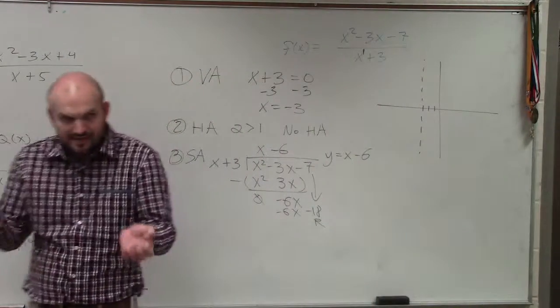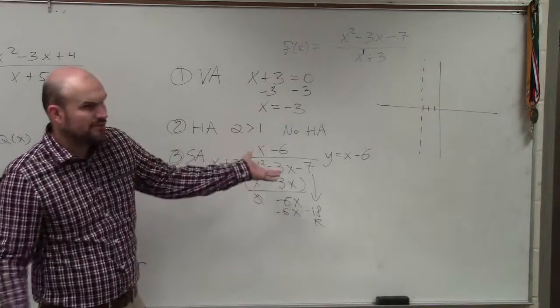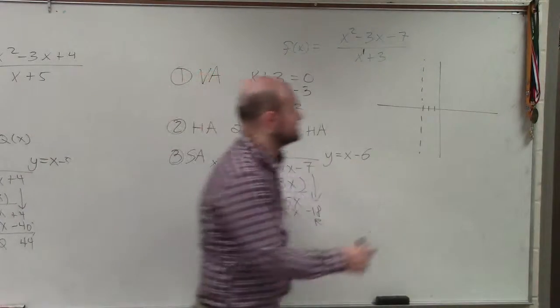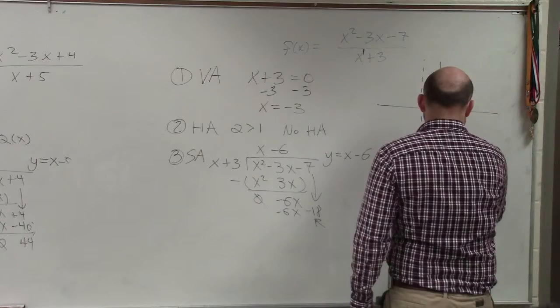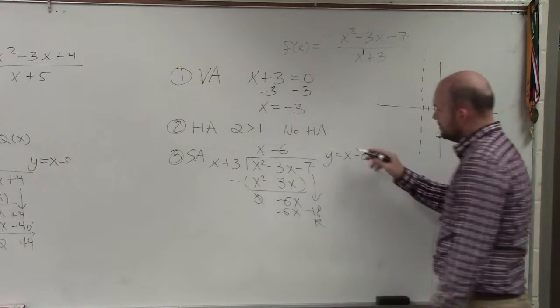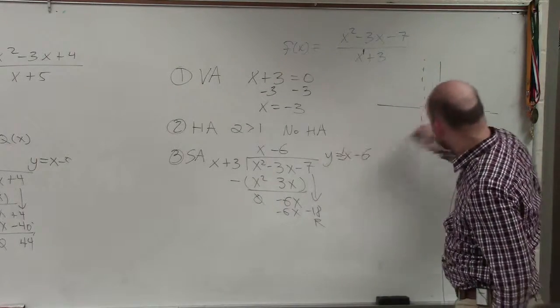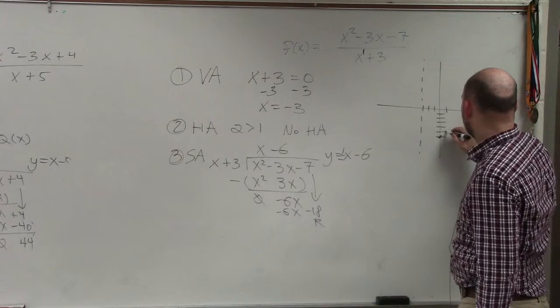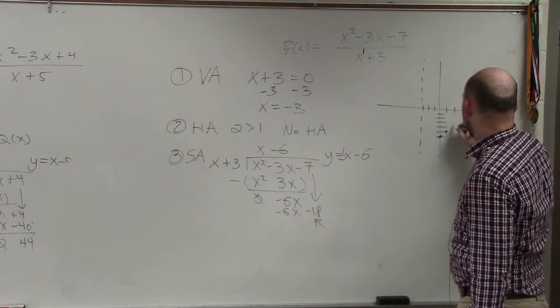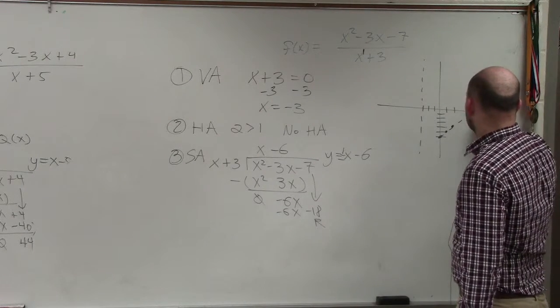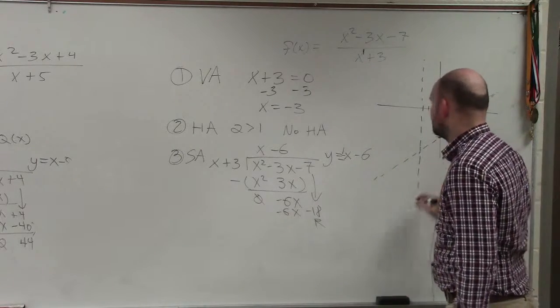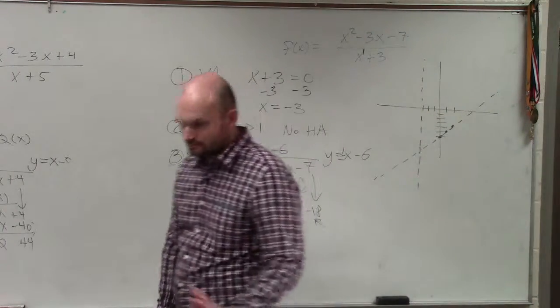The remainder is not going to affect my asymptote. How do you graph this? That's your y-intercept. 1, 2, 3, 4, 5, 6. My slope is 1 over 1. Up 1, over 1. Up 1, over 1. Well, it's going to look something like that.